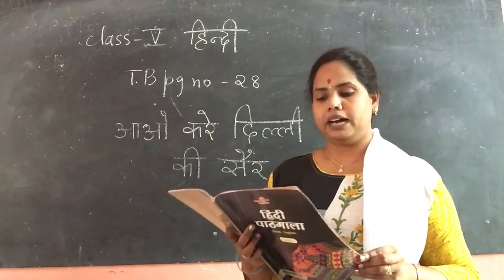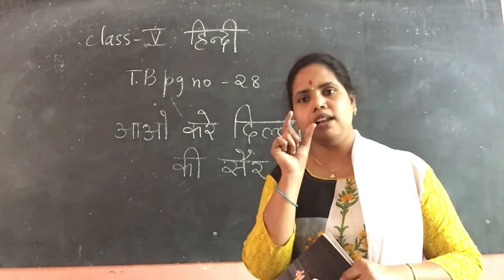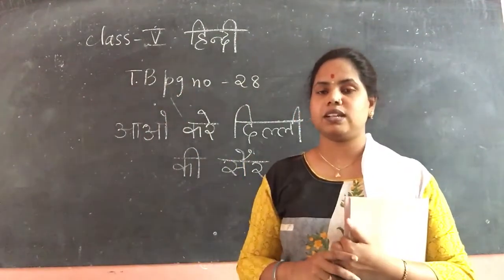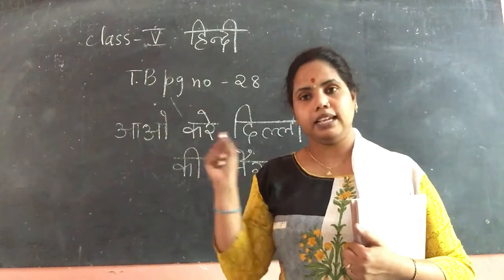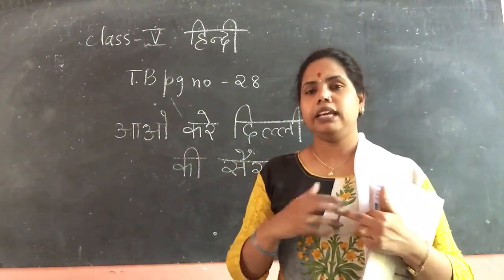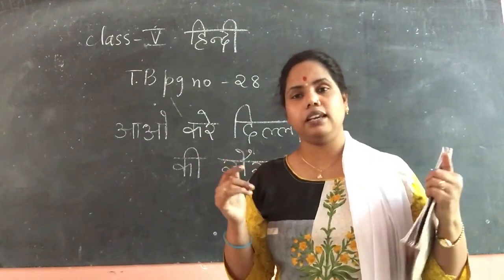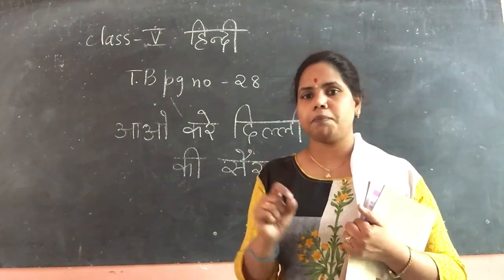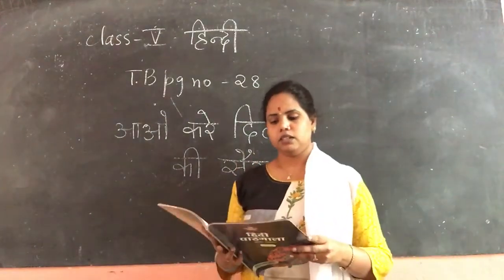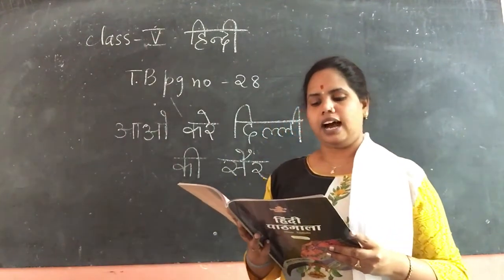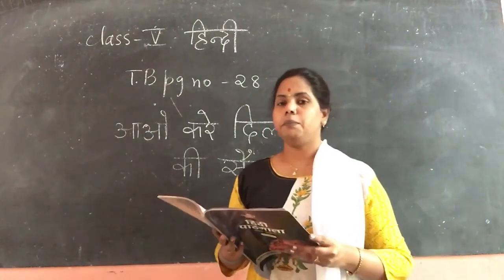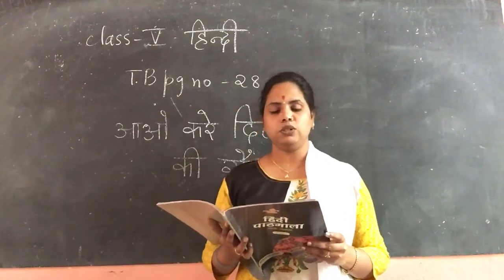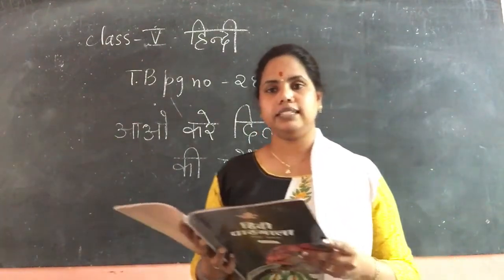Kuch log Dilli ko laghu Bharat bhi kehte hai — some people also call Delhi 'Laghu Bharat', meaning small India, where we can see many things. Whichever places of interest are there all over India, we can see all of those things in Delhi only. It is a very good and very beautiful place. Dilli mein anek darshneey sthal hain — there are many places of interest to visit and enjoy in Delhi. Come, let's go to Delhi and see what all is there.